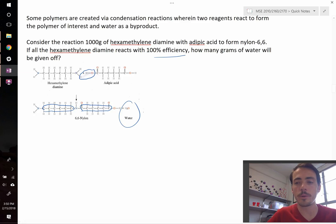So to solve this question, all we really need to do is figure out how many moles of hexamethylene diamine we start with. That will be the same number of moles of water that we create. Once we know the number of moles, we can easily turn that into a mass. So let's go ahead and do so. We start out with 1,000 grams of hexamethylene diamine. How many moles is that?